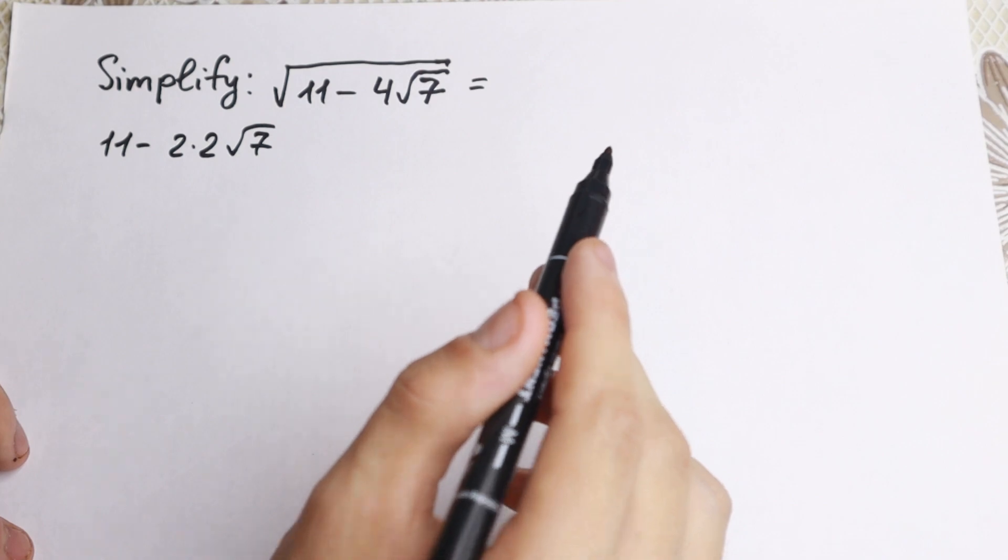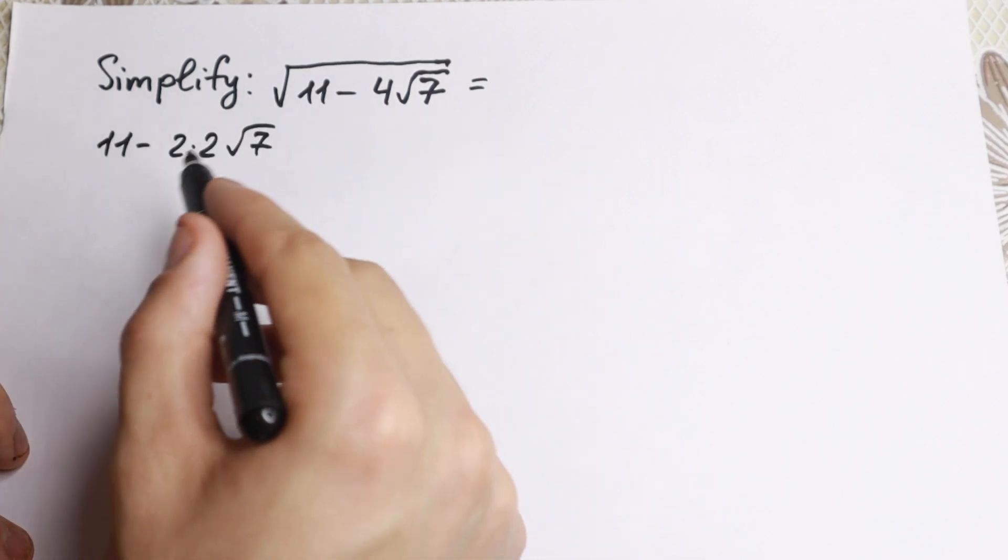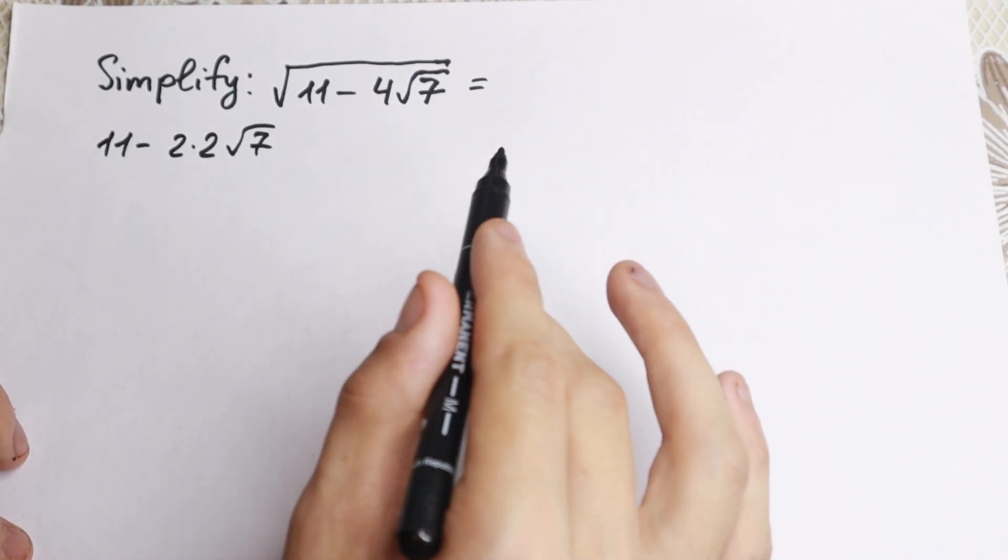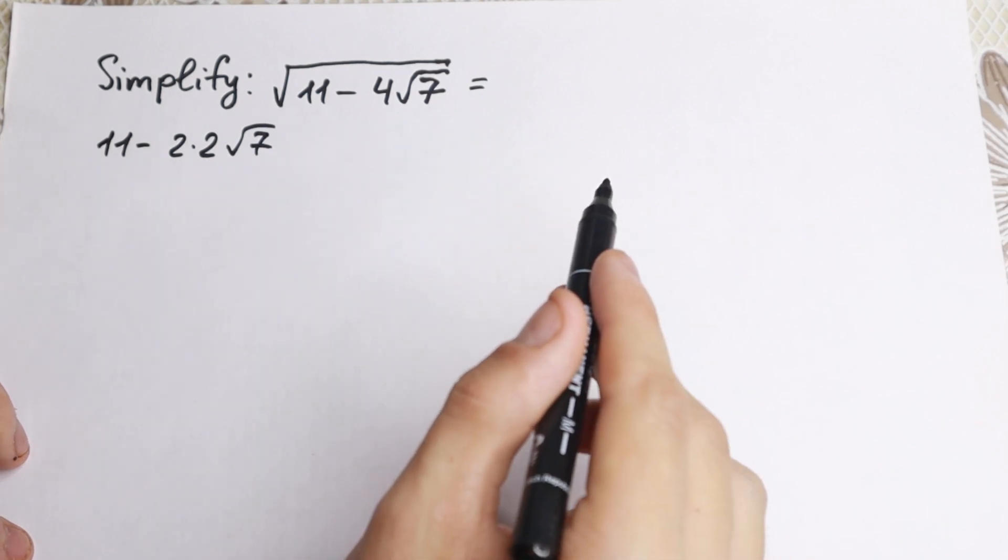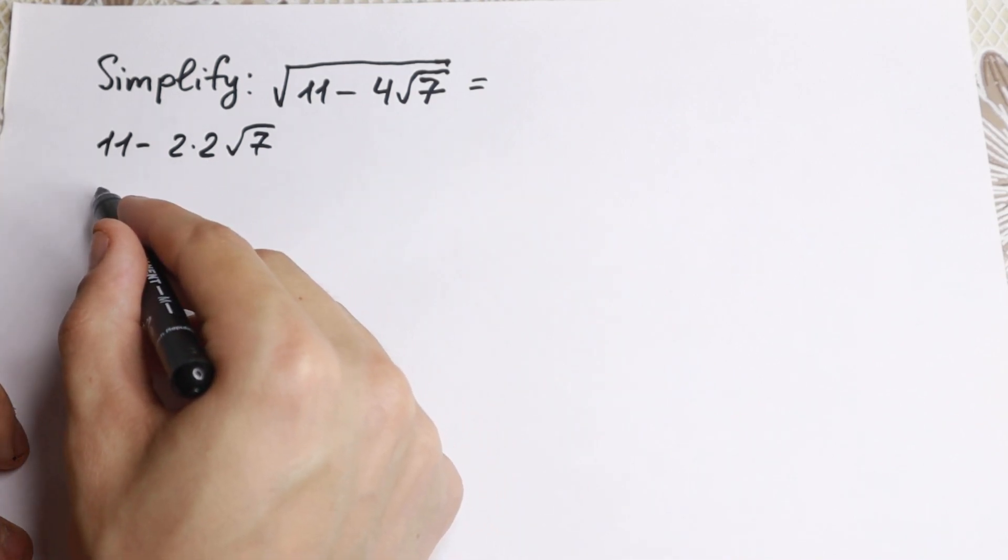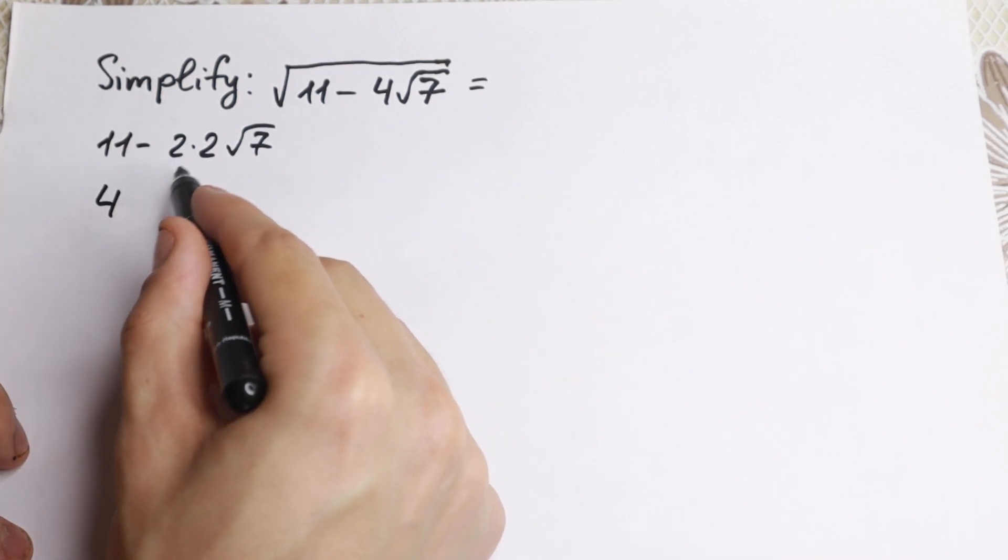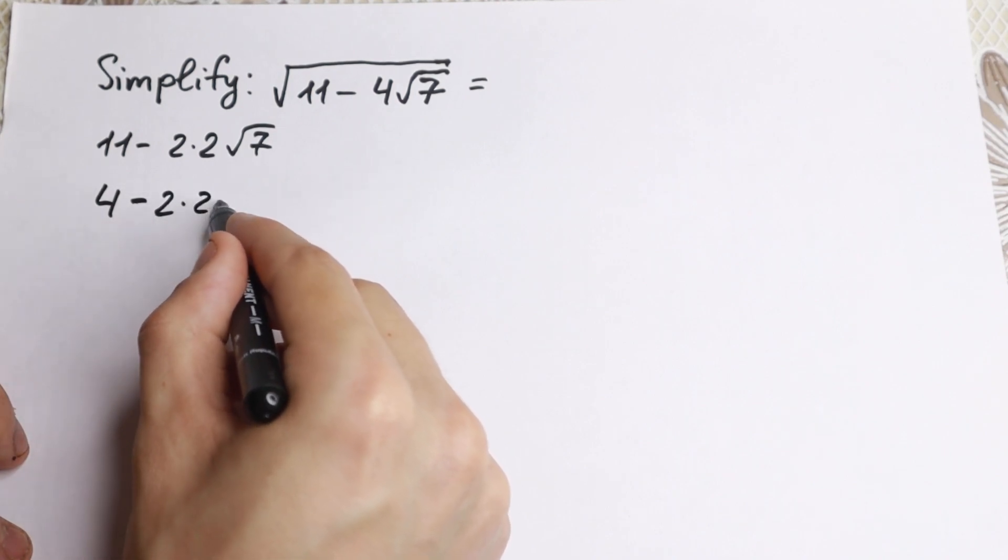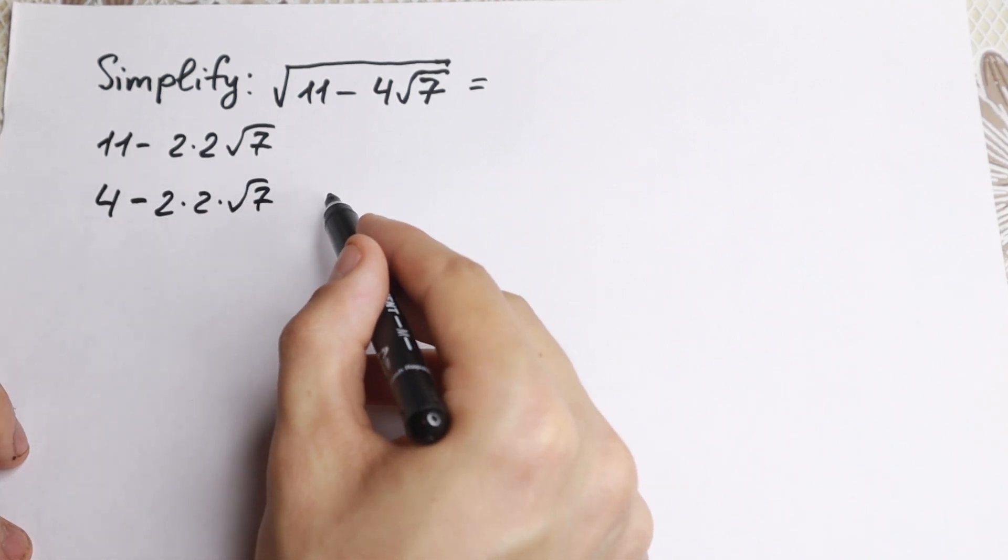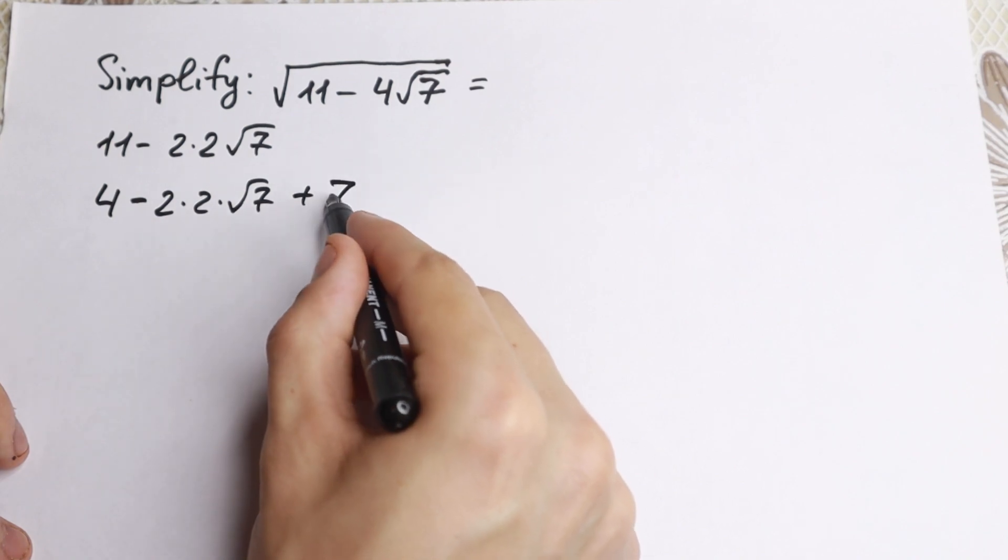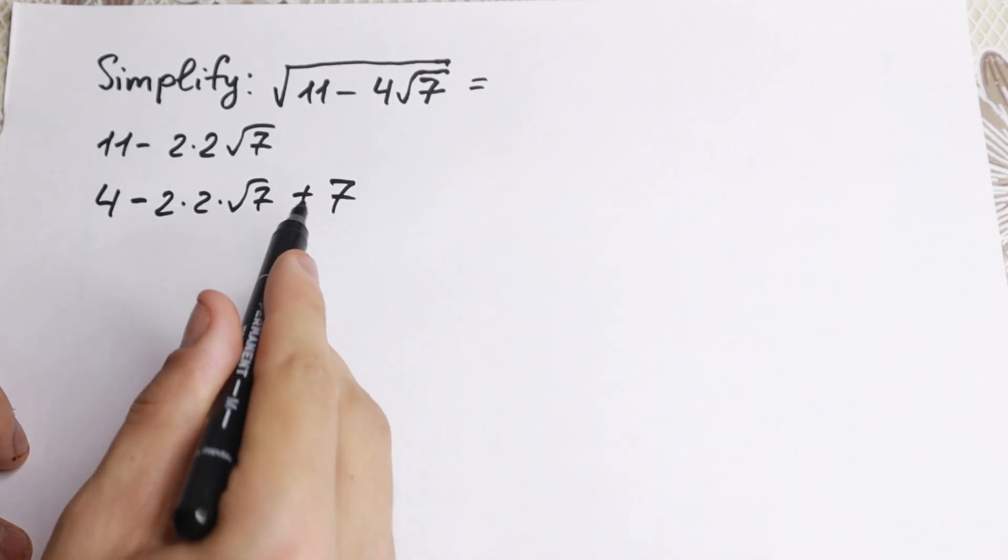Next step, I suggest you write this 11 as 4 plus 7. Why do I write this? Because I'm going to show you a really good trick later. So this 11 I write as 4, then I write minus 2 times 2 times square root of 7, and plus 7 in the end.